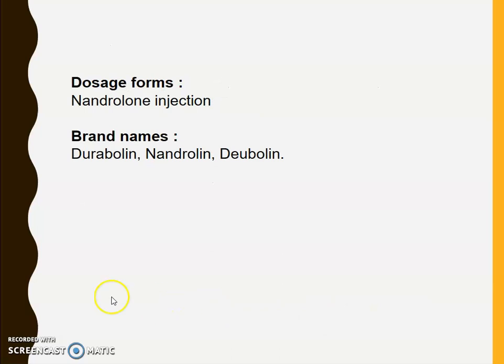Also used in palliative treatment of disseminated breast cancer. Dosage form: it is available in the form of nandrolone injection. Brand names include Durabolin, Nandroline, and Duabolin.